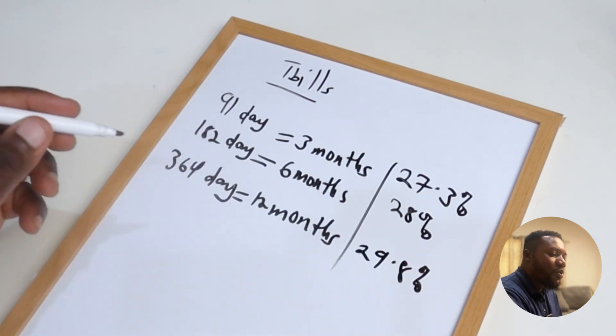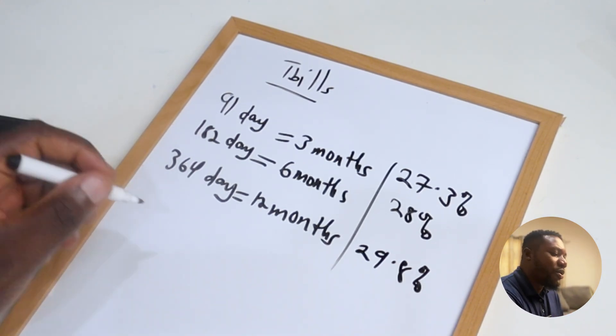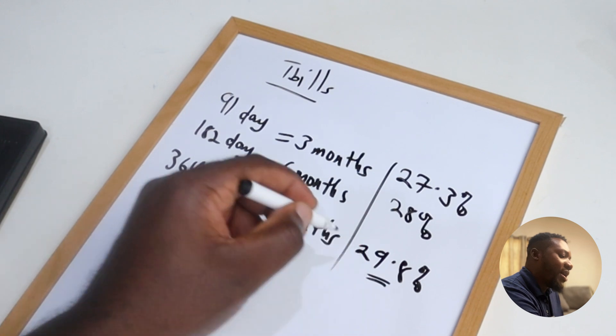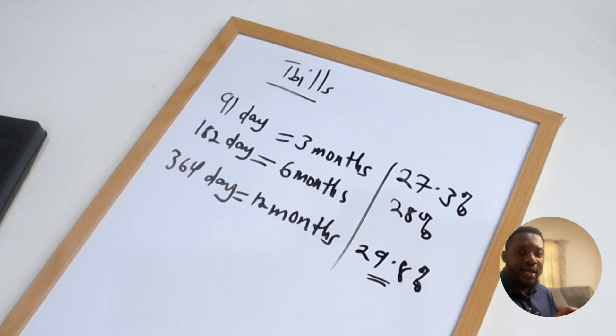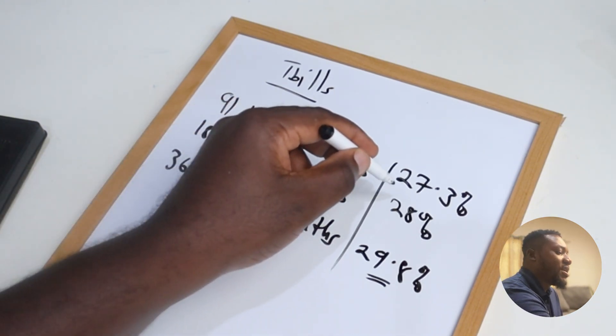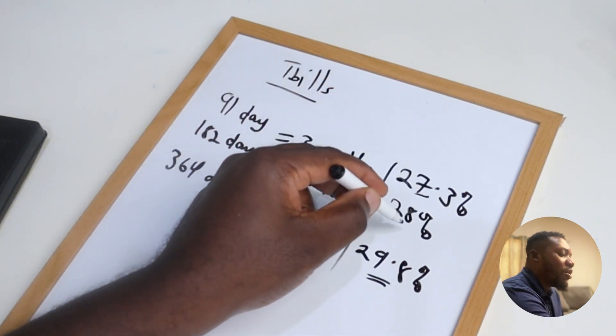So if you walk into the bank today and you decide to invest your money for the entire year, you're going to get 29.8 percent. Now where it gets tricky is when you decide to go for the 91 day bill or the 182 day bill.